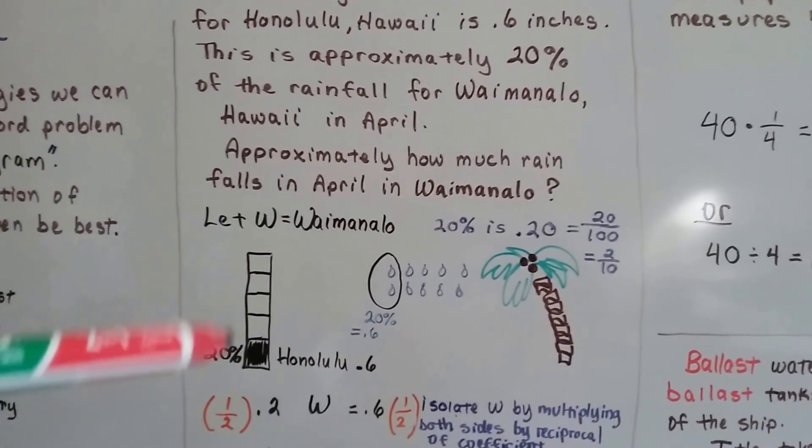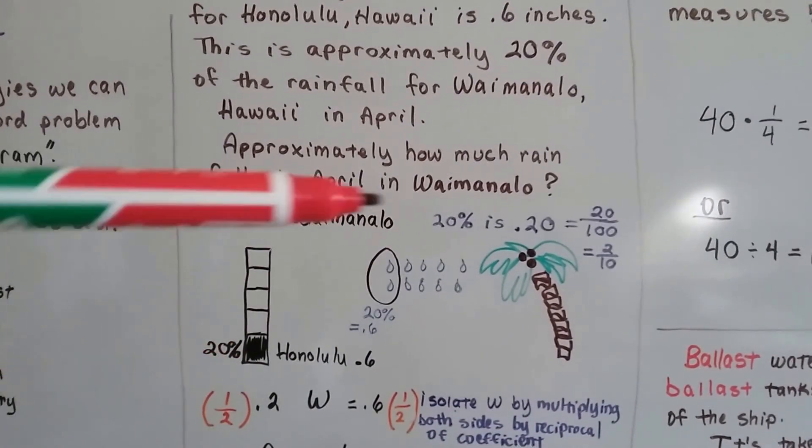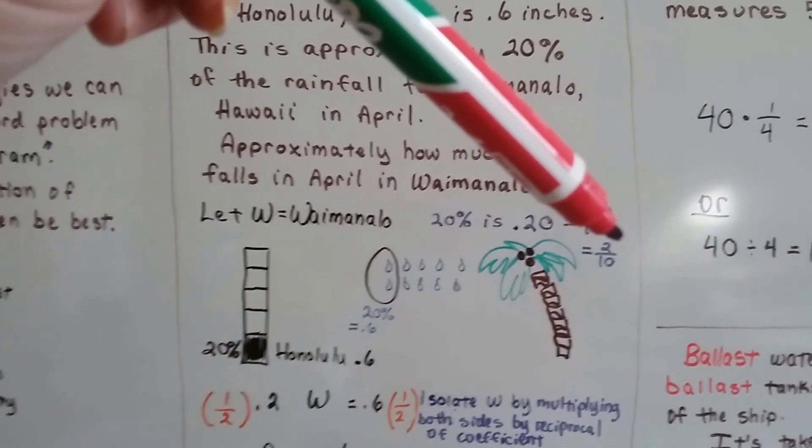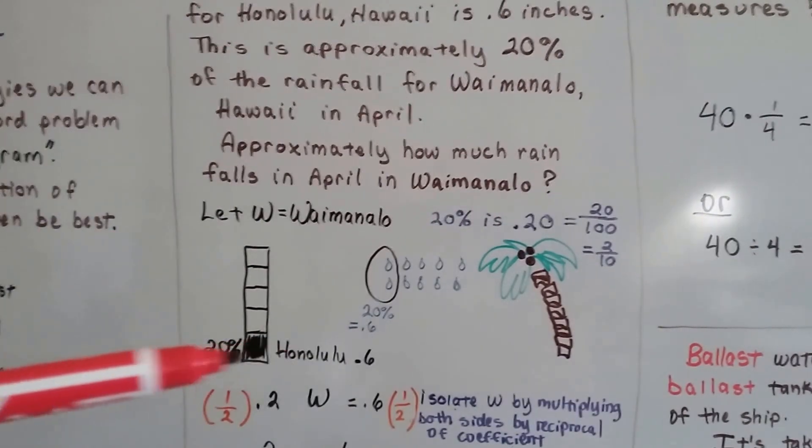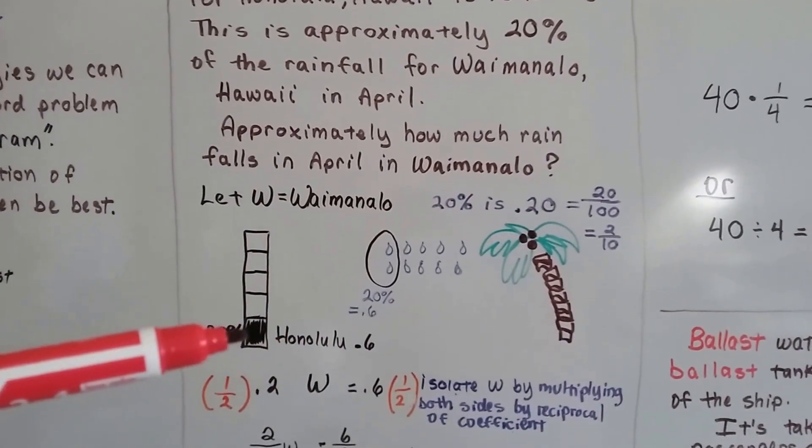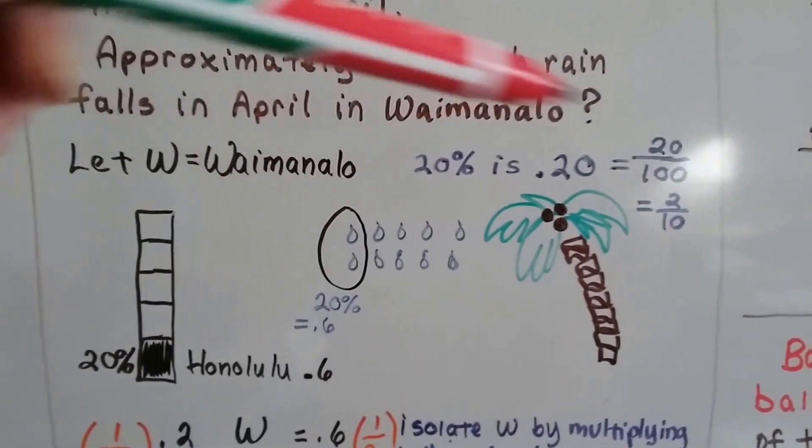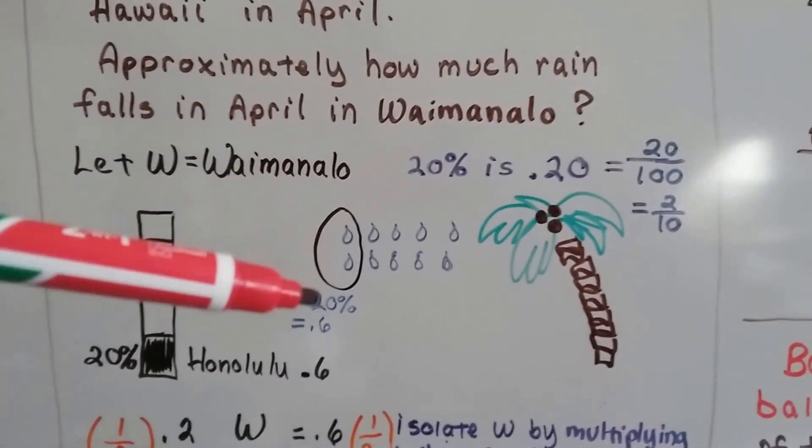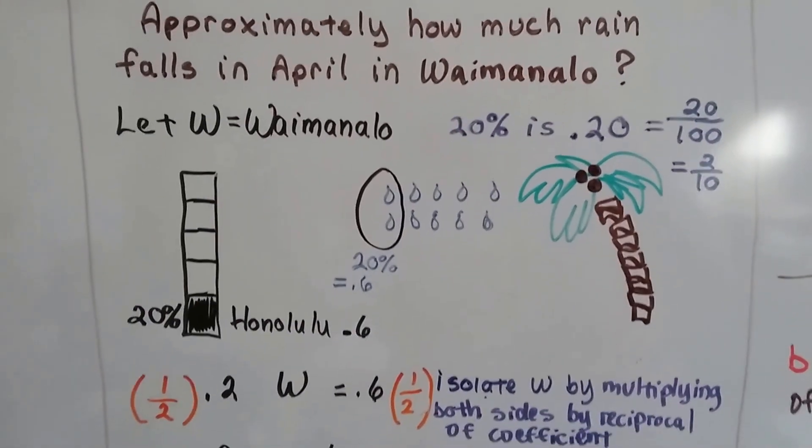So what we can do is just draw a little bar and show that Honolulu is 20%. That's 20 parts of a hundred, two tenths, or one fifth. So we could break it into fifths and say that that's Honolulu at 0.6. We could even draw raindrops. We can draw ten raindrops and circle two of them to represent the 20% as 0.6. And we can add up the 0.6's.